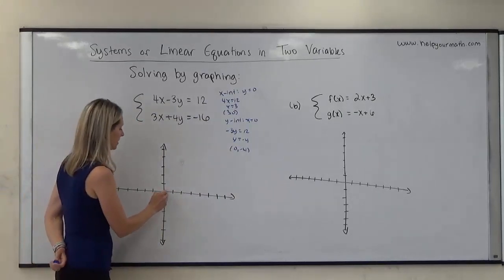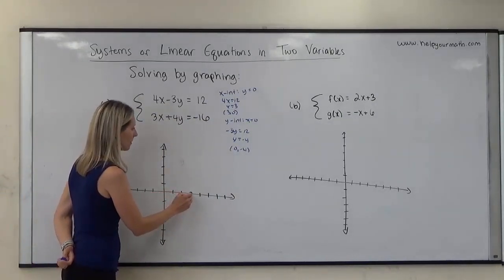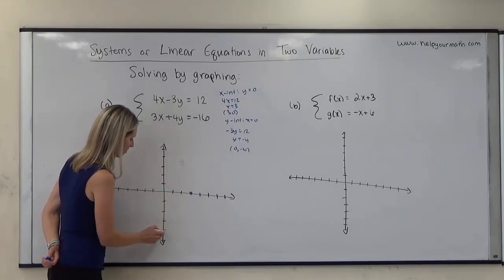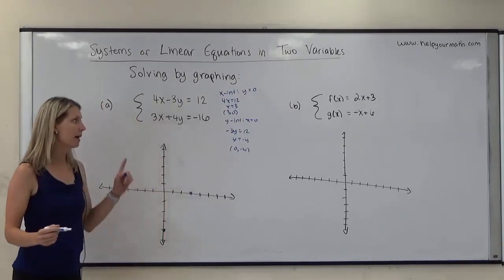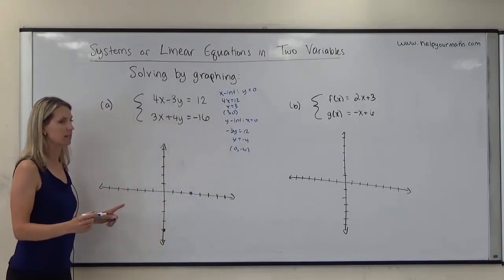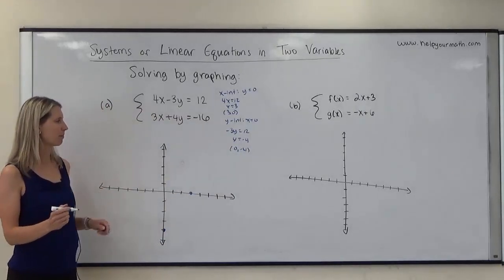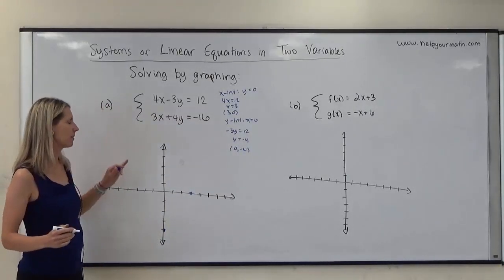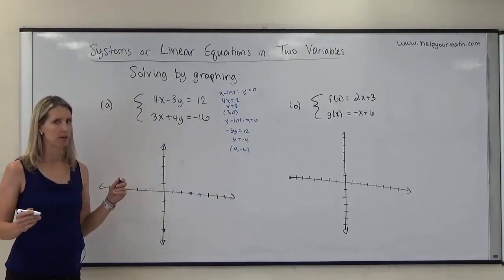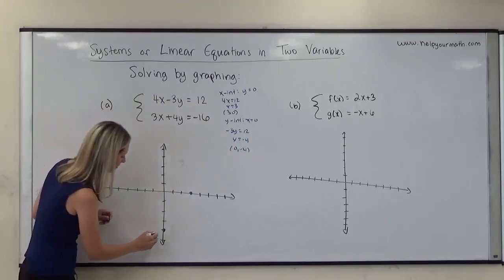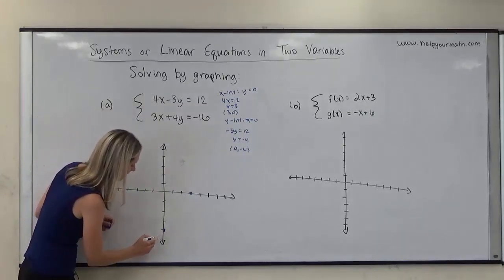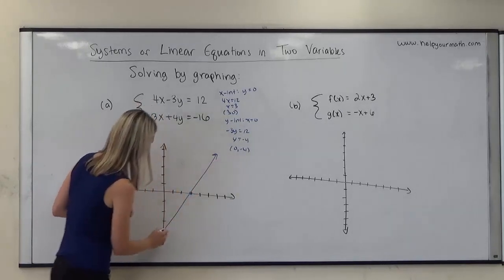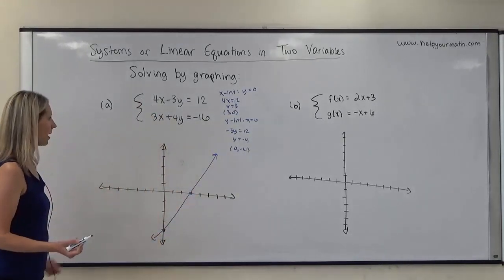So (3, 0) will be over at 3, and (0, negative 4) will be down 4. I'm going to do the best I can to connect these lines, because it's very important that I'm relatively accurate since I have to see where this will intersect with another line. Hopefully that is a straight enough line.